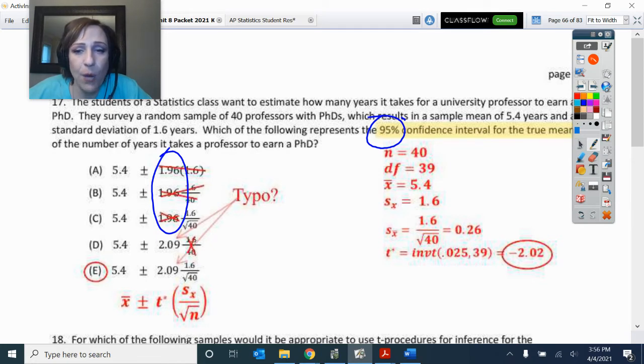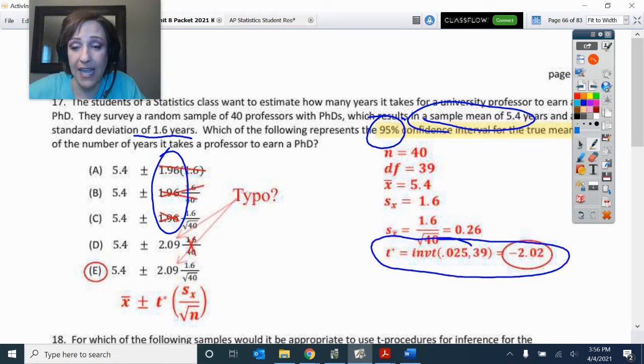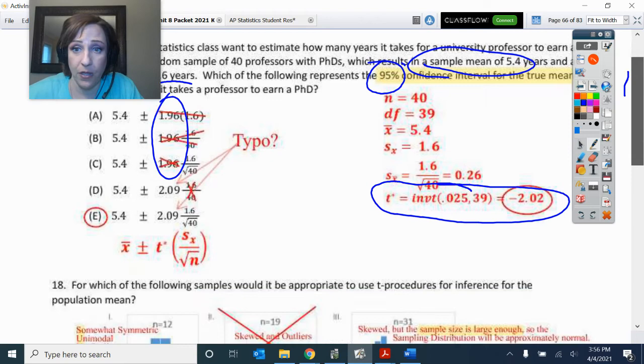Because this is a mean problem. It's about the sample mean. And I just have the sample mean of 5.4 and the sample standard deviation of 1.6. If I just have the sample mean and the sample standard deviation, I have to use T scores and T curves to do this. So I have to do inverse T of one tail comma degrees of freedom, 39 degrees of freedom. So the critical value is 2.02. So that's why I wondered if this 2.09 was a typo. And then there was that formula for that interval.